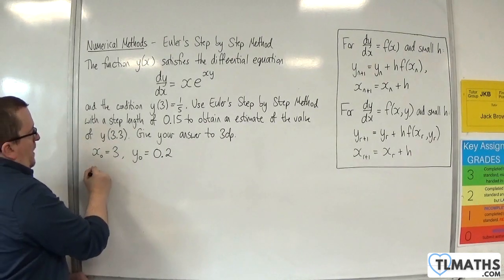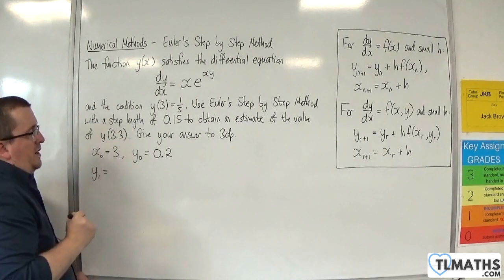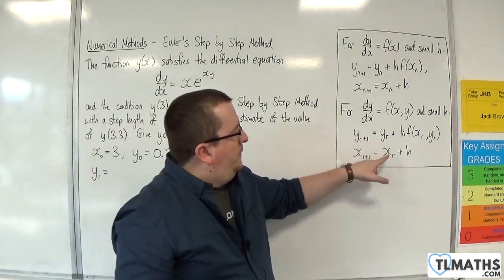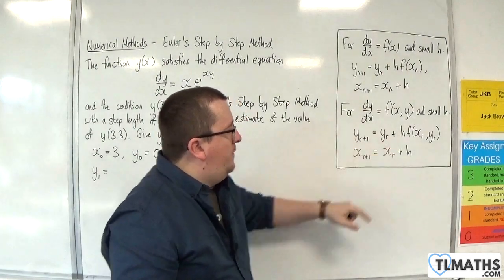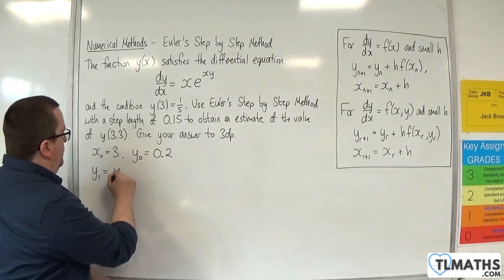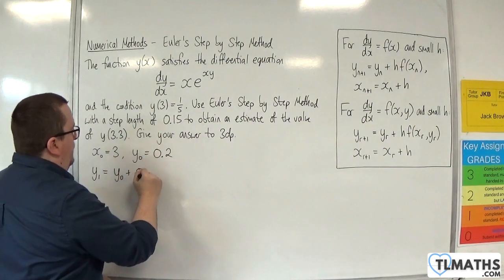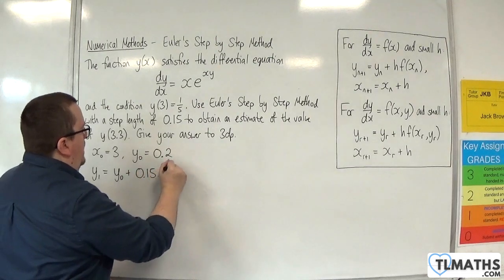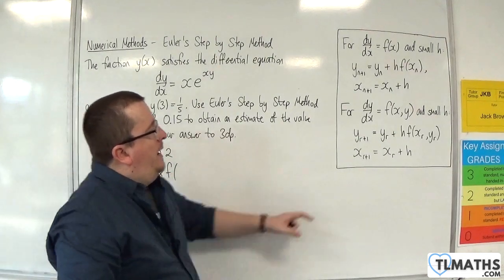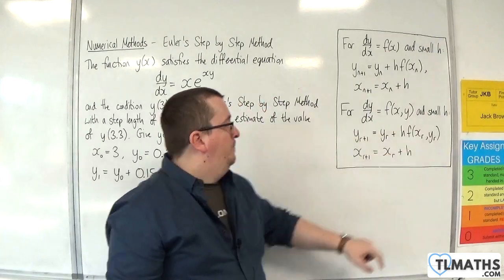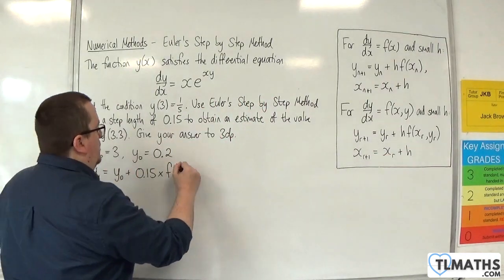So what we want is the next term, so y₁, which using this will be the next term, is the previous term, so y₀, plus h, which is 0.15, times by f of x₀, y₀. So that would be 3, 0.2.